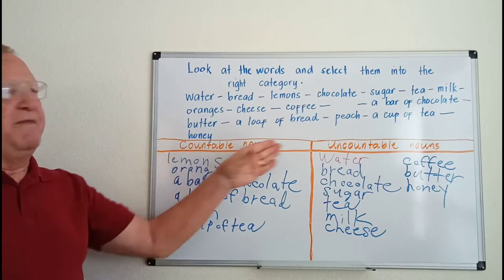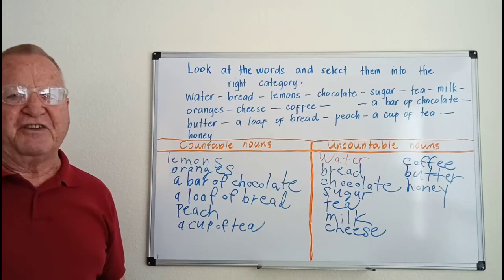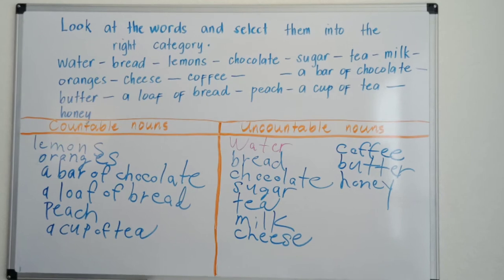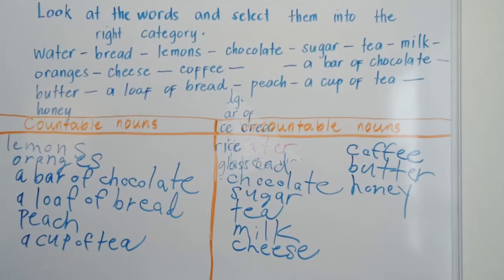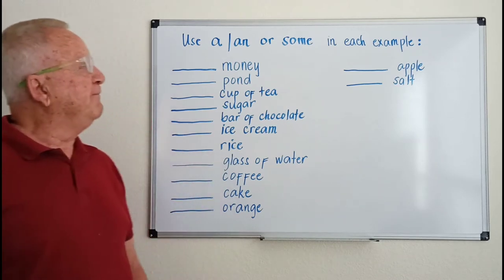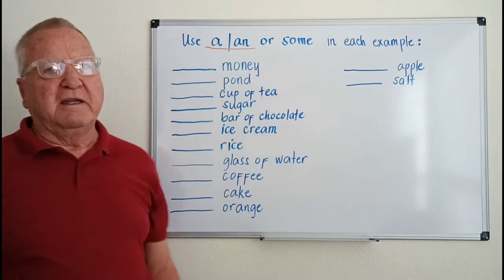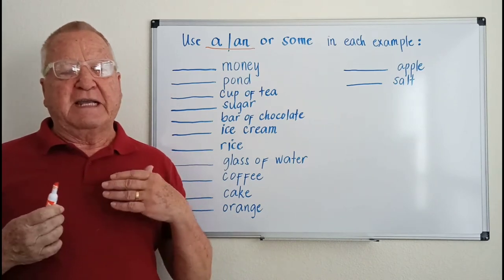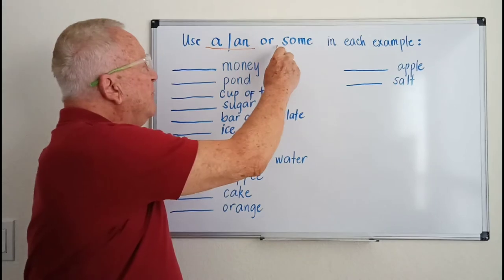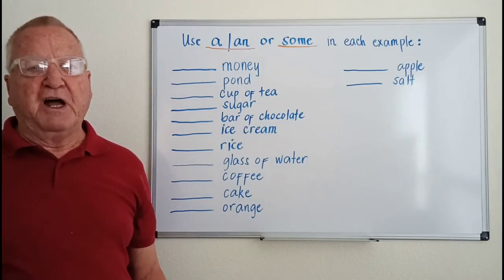So there you have it — countable and uncountable nouns. Now we're going to do another activity: we're going to use 'a' or 'an' with countable nouns, and 'some' with uncountable nouns.